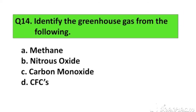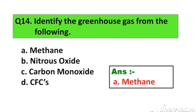Question number 14. Identify the greenhouse gas from the following: Option A. Methane, Option B. Nitrous oxide, Option C. Carbon monoxide, Option D. CFC. The right answer is Option A. Methane.